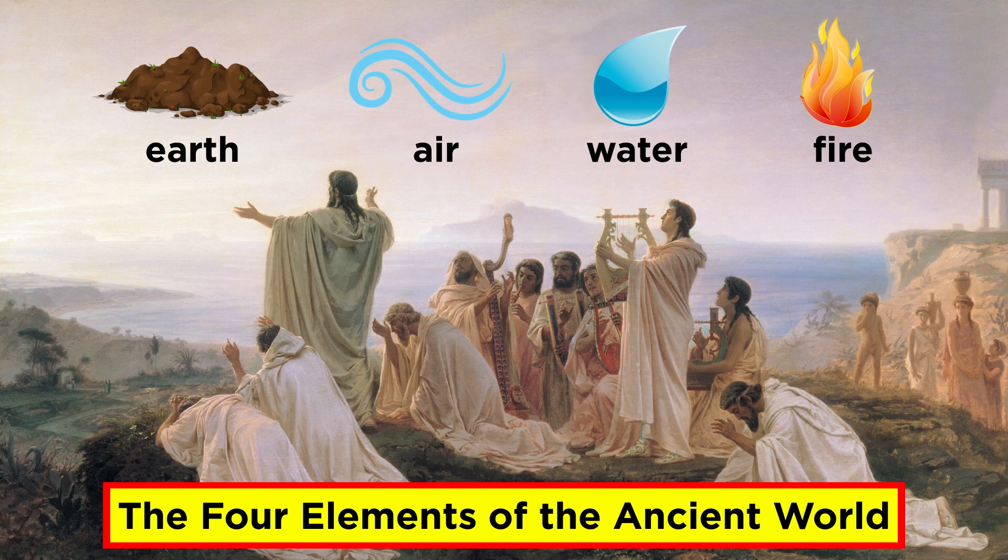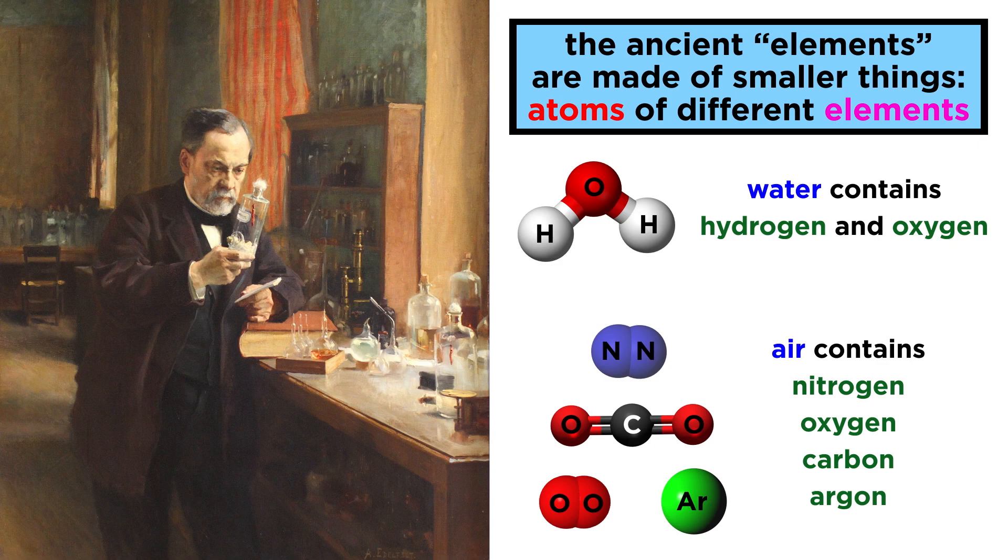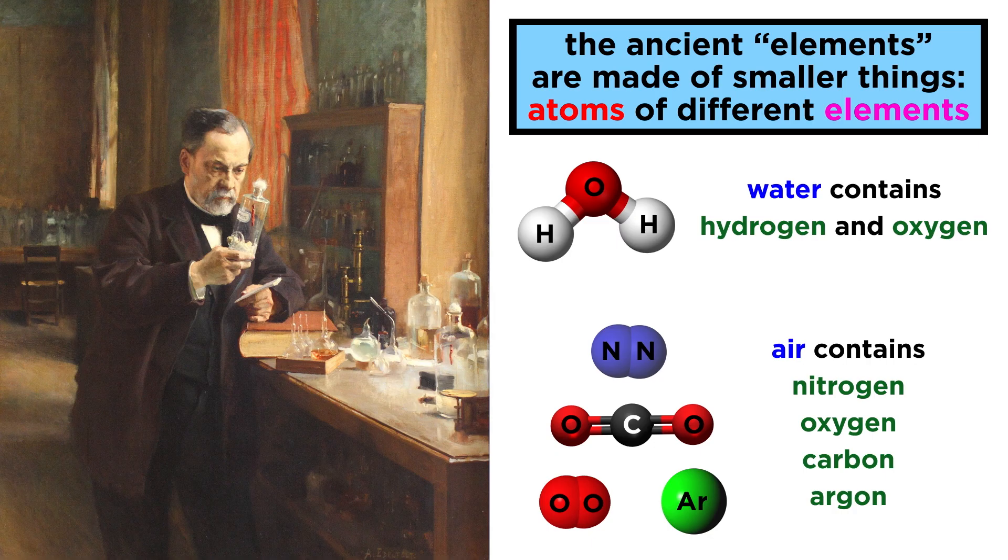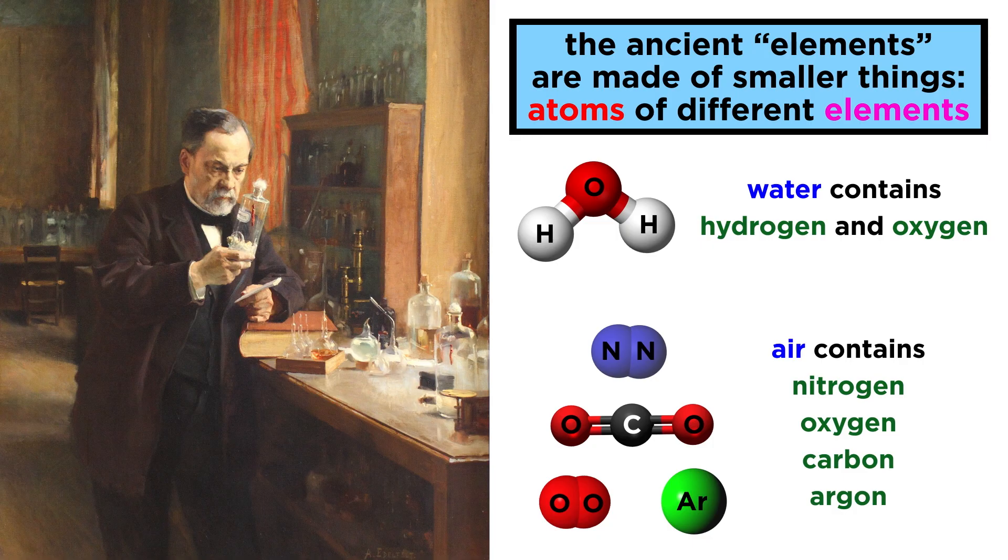Thousands of years ago, we thought that the universe was made of earth, air, water, and fire. Once science came along, we realized that these are not fundamental elements at all, and that everything on earth is made of atoms of different elements, like carbon, oxygen, hydrogen, and dozens more.